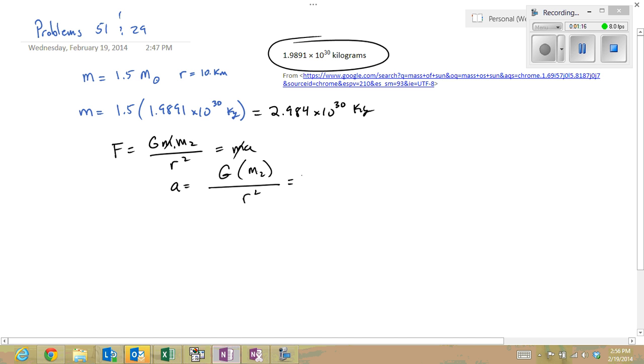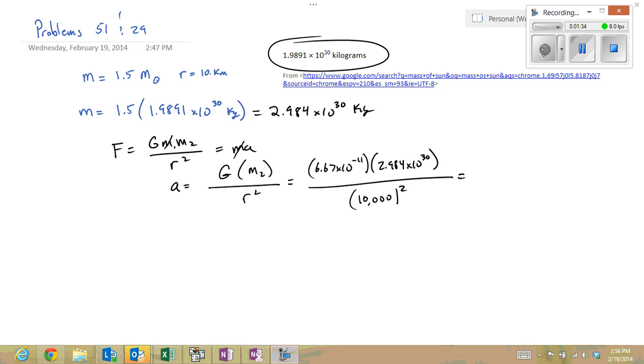So this is going to equal 6.67 times 10 to the minus 11th, times the mass, 2.984 times 10 to the 30th, all divided by 10,000 meters squared. 1.99 times 10 to the 12th meters per second squared.